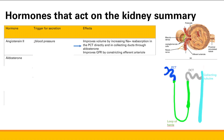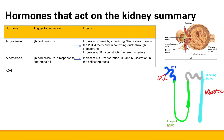Next hormone is aldosterone. We just talked about it, but what's the trigger? The trigger is angiotensin 2 in response to decreased blood pressure. Microscopically, where is aldosterone going to act specifically in the tubules? Angiotensin 2 acts in the proximal convoluted tubule. Aldosterone acts in the collecting ducts, and what does it do? It causes increased sodium reabsorption in exchange for H-plus and potassium secretion.